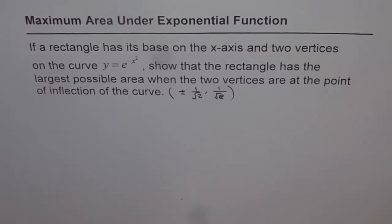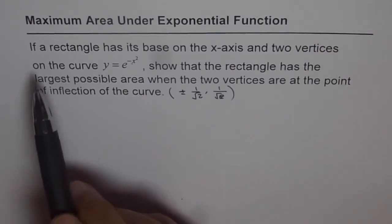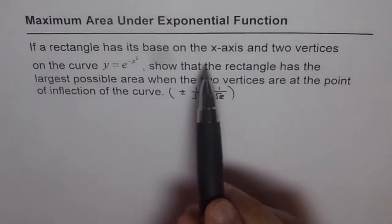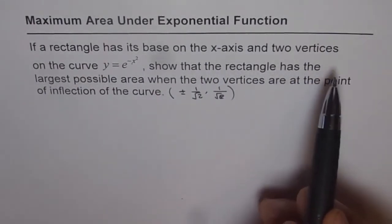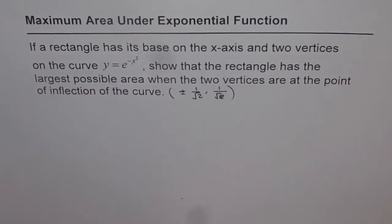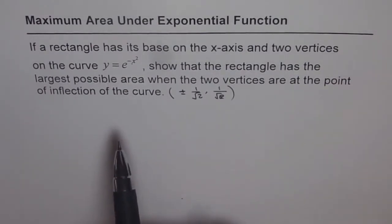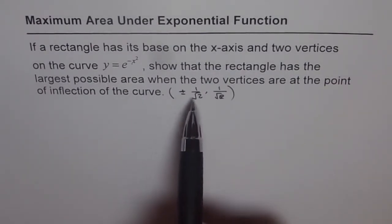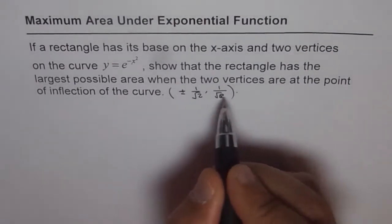Let's move on with our function y equals e to the power of minus x squared. Here is a very interesting question related to the same. If a rectangle has its base on the x-axis and two vertices on the curve y equals e to the power of minus x squared, show that the rectangle has the largest possible area when the two vertices are at the point of inflection of the curve. In a previous video, we found that the point of inflection for this curve is at x equals plus or minus 1 over square root of 2.